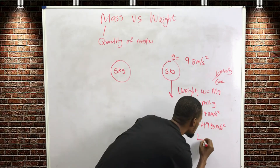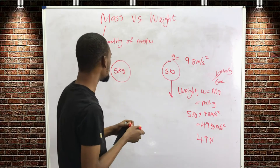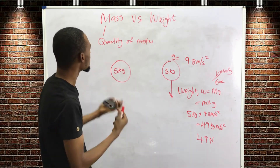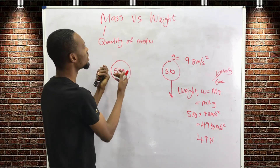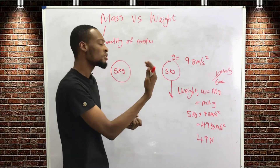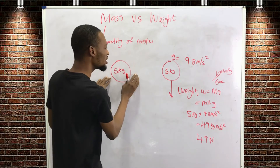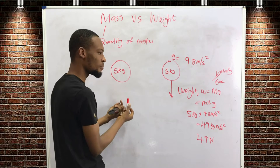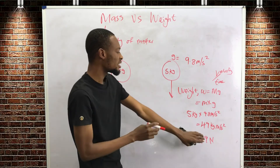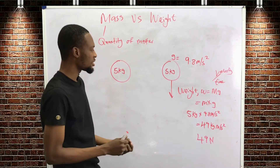Kilogram meter per second squared is the same unit as the Newton — that's the unit of force. So the first difference: mass is the quantity of matter in a body; weight is the Earth's pull on the body. Mass is measured in kilograms or grams, while weight is measured in kilogram meters per second squared, or Newtons.